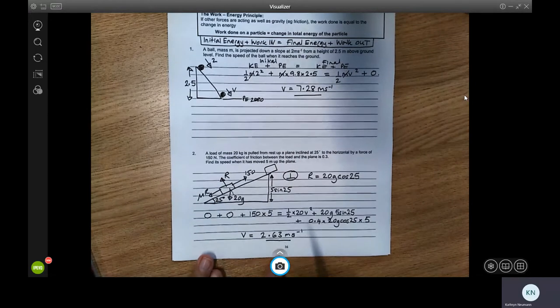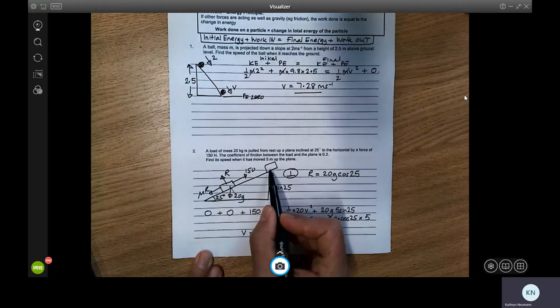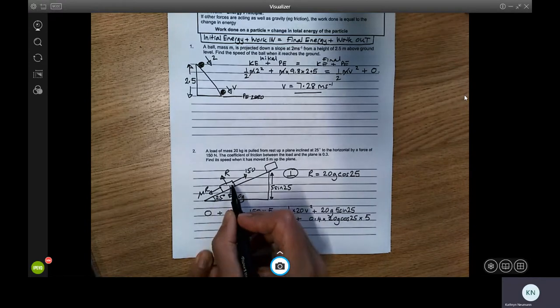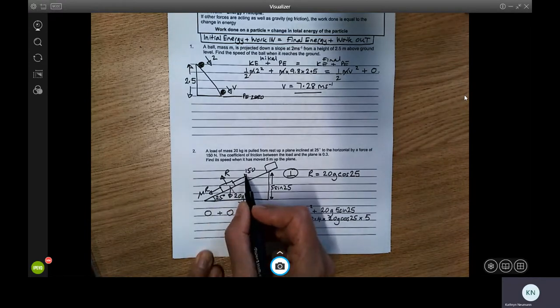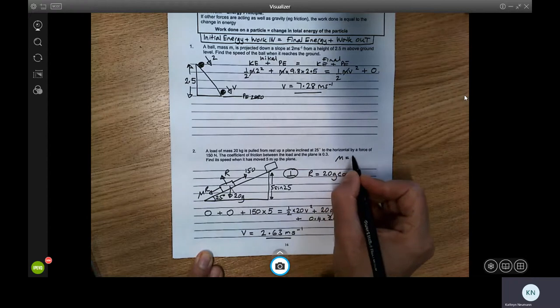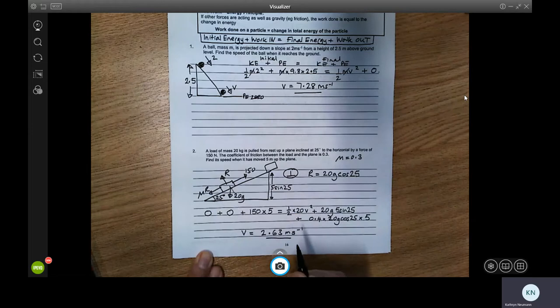So let's see how it works with this question here. We've got a load 20 kilograms pulled up from rest up the slope. The slope is 25 degrees to the horizontal and the force we pull with is 150 newtons. The coefficient of friction, mu, is equal to 0.3. It moves five meters up the plane.